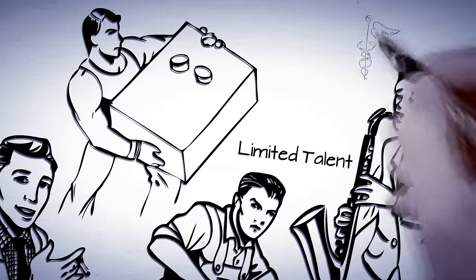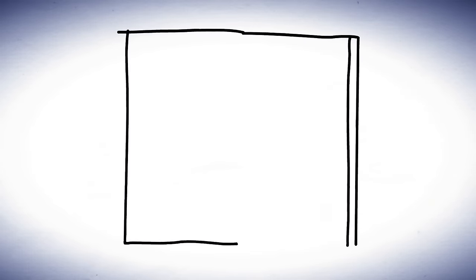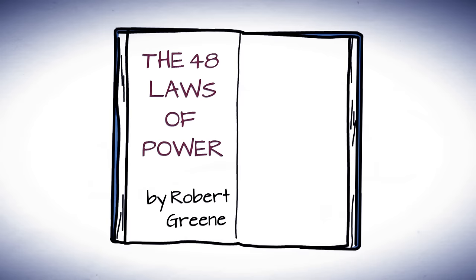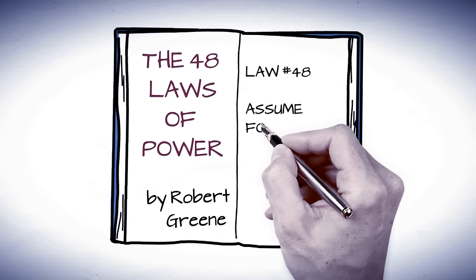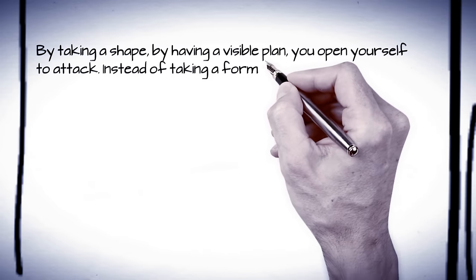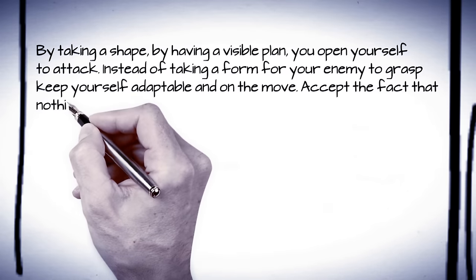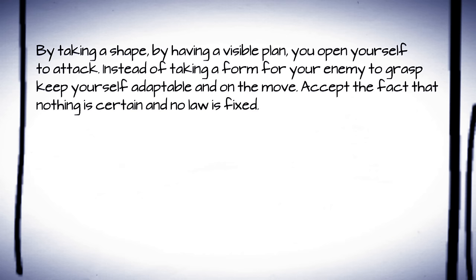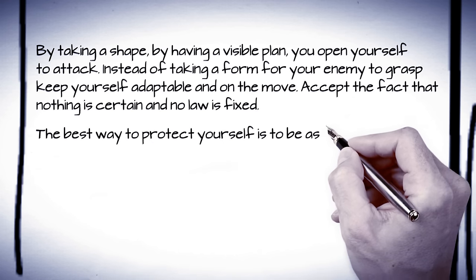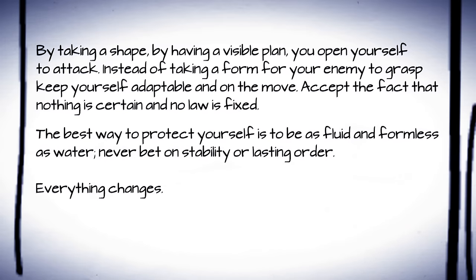Each video on the 48 Laws of Power playlist starts by explaining the definition of the law. For example, Law 48 - Assume Formlessness: By taking a shape, by having a visible plan, you open yourself to attack. Instead of taking a form for your enemy to grasp, keep yourself adaptable and on the move. Accept the fact that nothing is certain and no law is fixed. The best way to protect yourself is to be as fluid and formless as water. Never bet on stability or lasting order. Everything changes.